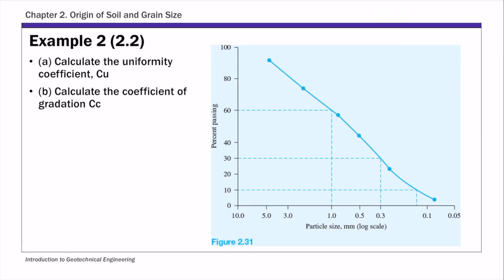Example 2: this is an example of a particle size distribution curve. In this example, you are given this particle size distribution curve, and you are asked to calculate two coefficients: the uniformity coefficient and the coefficient of gradation.